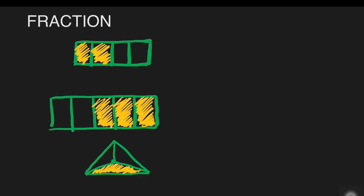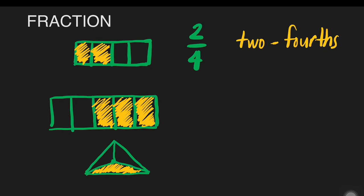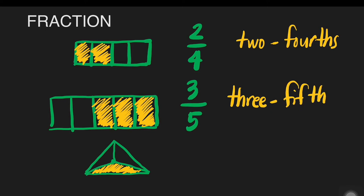For the first one, this is two-fourths, written as two-fourths. For the second fraction, this is three-fifths, written as three-fifths. And for the last fraction, this is one-third, written as one-third.